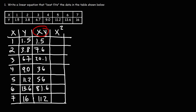Now let's calculate x squared: 1²=1, 2²=4, 3²=9, 4²=16, 5²=25, 6²=36, 7²=49.